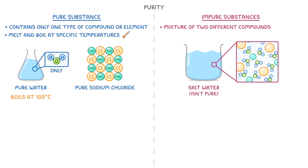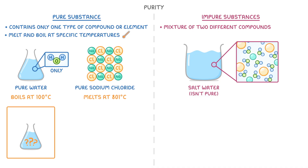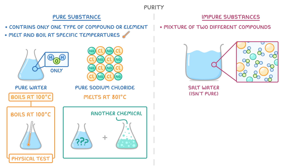For example, water boils at 100 degrees Celsius, while sodium chloride melts at 801 degrees Celsius. And we can use these facts to help us identify unknown substances. So if we had a liquid and we didn't know what it was, but when we tested it, it boiled at 100 degrees Celsius, then we could be pretty sure that it was water. And we would consider this a physical test, because we're testing the physical properties of that substance, whereas if we reacted it with another chemical to find out what it was, we'd consider that a chemical test. The same goes for other pure substances — we can test their melting and boiling points in the laboratory, and then look them up in a data book to see which chemical they could be.